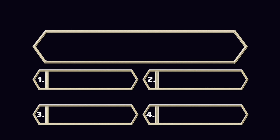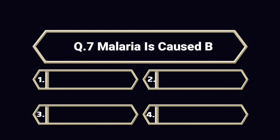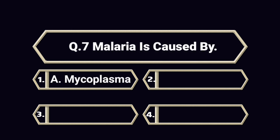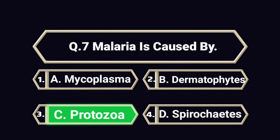Question number 7. Malaria is caused by. A. Mycoplasma. B. Dermatophytes. C. Protozoa. D. Spirochetes. Answer is C. Protozoa.